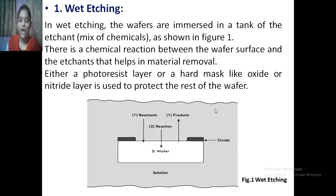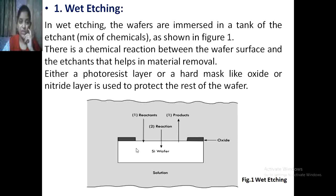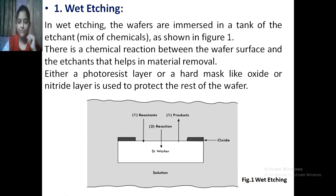In wet etching, the wafers are immersed in a tank. The silicon wafer is immersed in the tank, which is filled with a solution. Reactants are added — the tank contains a mix of chemicals. There is a chemical reaction between the wafer surface and the etchant that causes the material to be removed.